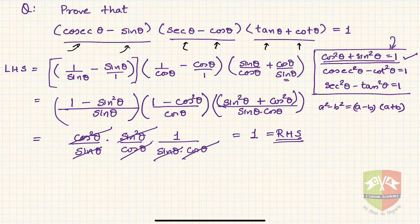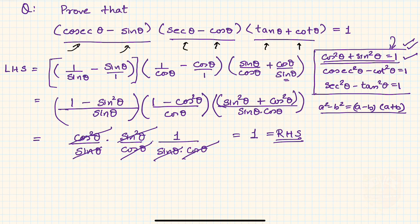The learning from this question is: while it helps to reduce to the basic form of sine and cos, it is not always necessary. You also need to keep in mind the three Pythagorean identities and the algebraic identities, which are useful in solving trigonometric identities. Thank you.